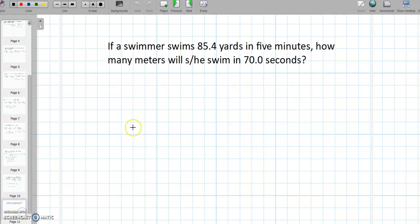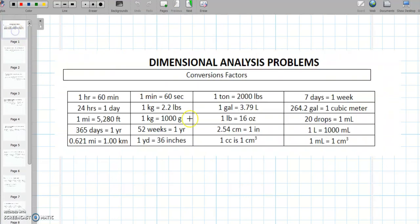Let's move on to the next one. If a swimmer swims 85.4 yards in 5 minutes, how many meters will they swim in 70 seconds? Okay, so we are given 85.4 yards per 5 minutes. So how many meters will they swim in 70 seconds? So to do that, we need to convert our yards into meters. So let's go and start with our conversion sheet. So we go up to our conversion sheet and we need to convert these yards into meters.